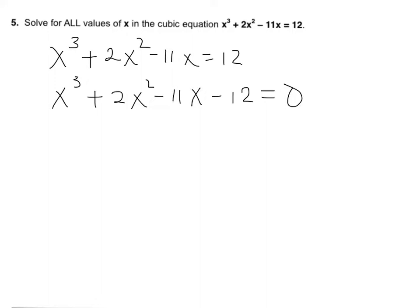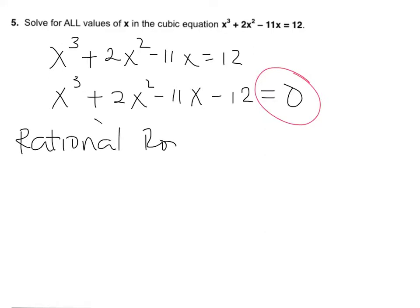Once the equation is already equal to 0, you have to try some numbers for x in such a way that it will satisfy or make the expression equal to 0. But to minimize the options, we can apply the rational root theorem.